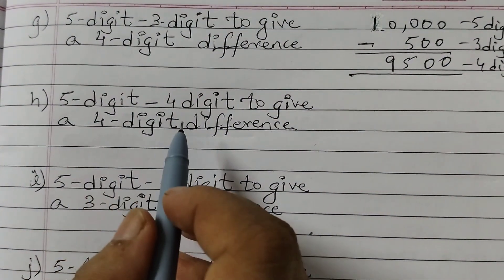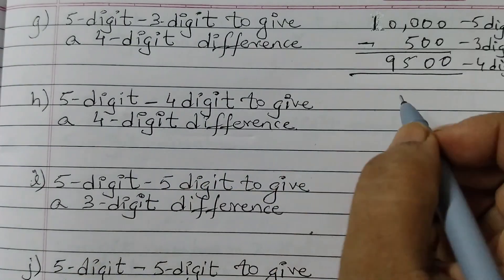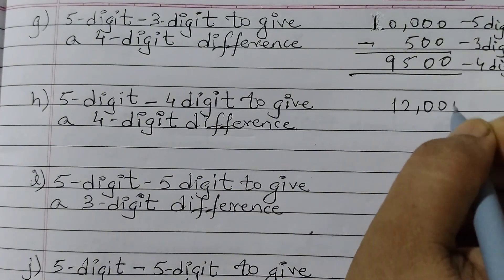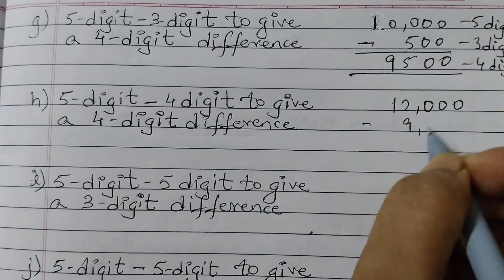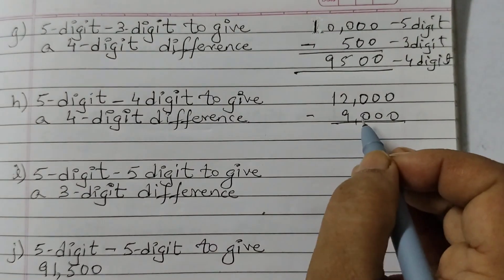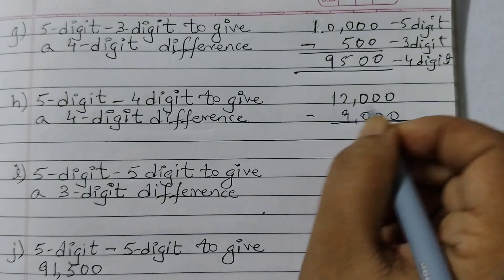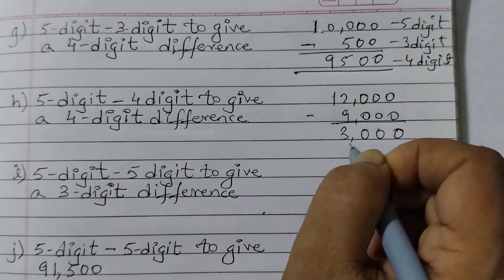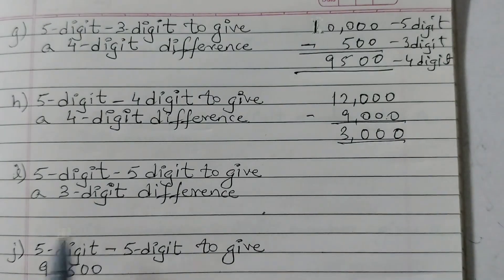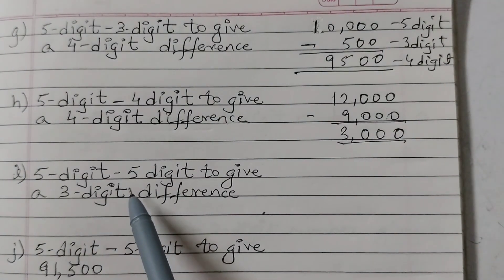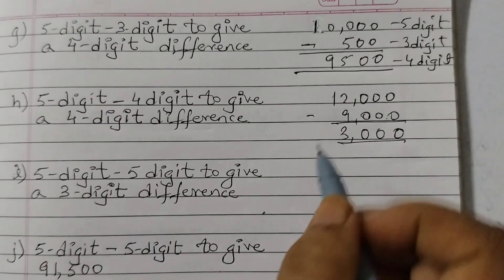Next: 5 digit minus 4 digit to give a 4 digit difference. We can take 12,000 minus 9,000. 12 minus 9 is 3, so we get 3,000. So: 5-digit minus 4-digit gives a 4-digit difference. Next: 5 digit minus 5 digit to give a 3 digit difference. Let's take 20,000 minus 19,700. These two numbers should be close because we need a 3-digit result.